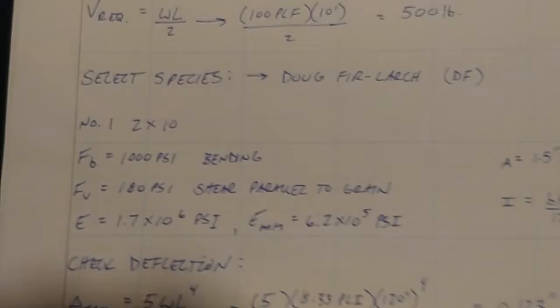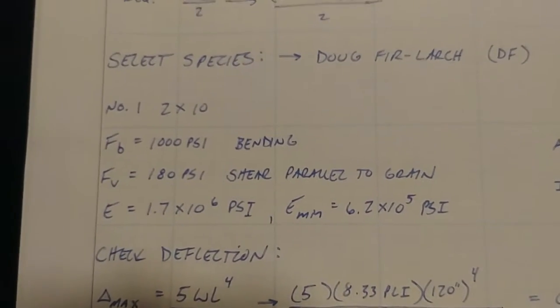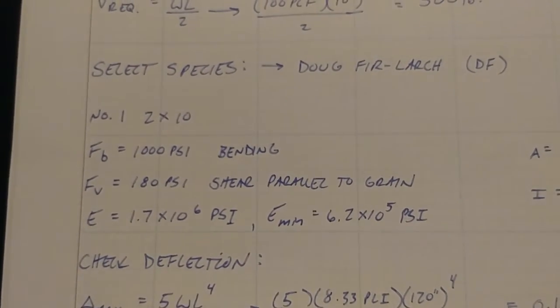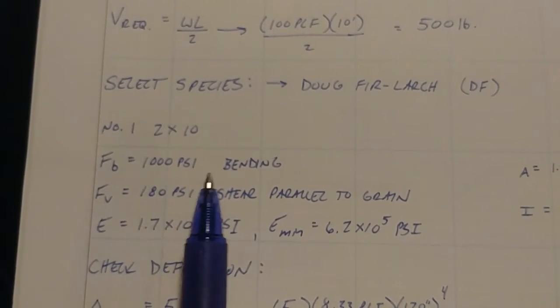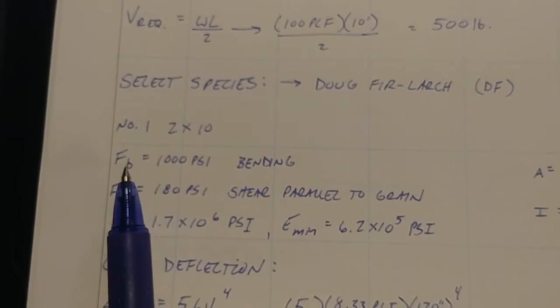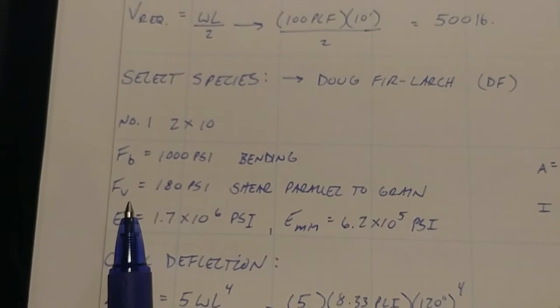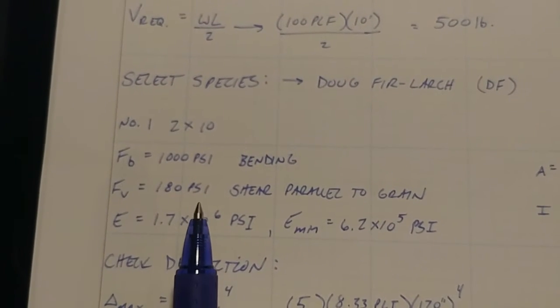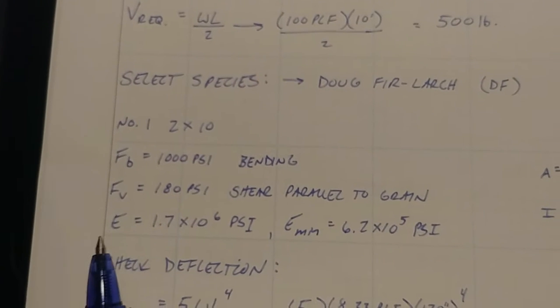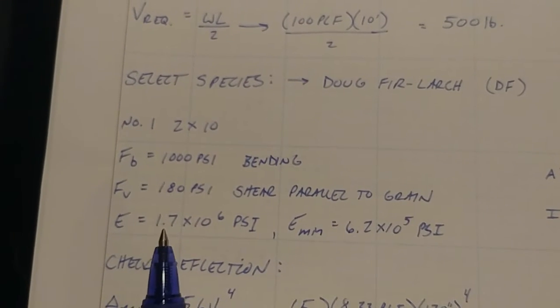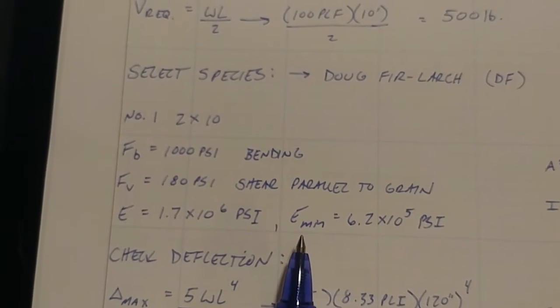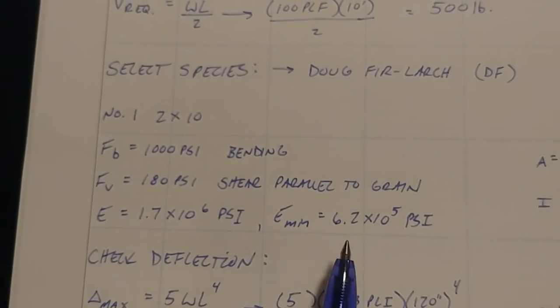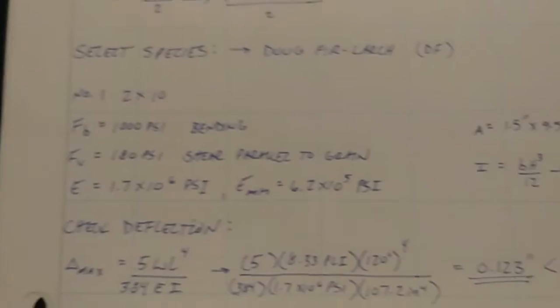So actually we don't need all of it because we're just designing for bending and for shear today. So FB 1000 PSI, that's bending, your bending stress. FV, your shear stress, is 180 PSI and that's shear parallel to grain. Your modulus of elasticity, 1.7 times 10 to the 6 PSI. And then your minimum modulus of elasticity, 6.2 times 10 to the 5th PSI.